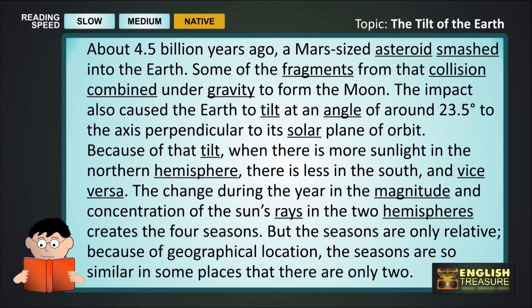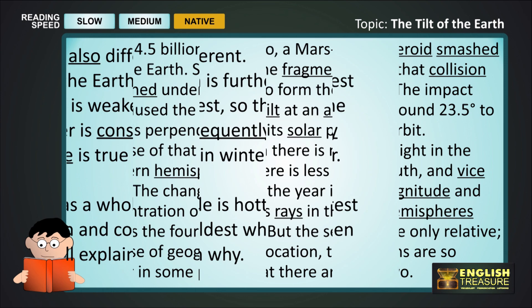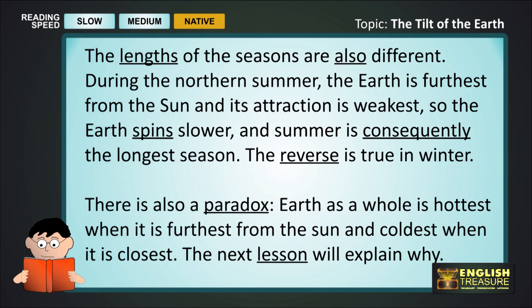But the seasons are only relative. Because of geographical location, the seasons are so similar in some places that there are only two. The lengths of the seasons are also different. During the northern summer, the earth is furthest from the sun, and its attraction is weakest. So the earth spins slower, and summer is consequently the longest season.